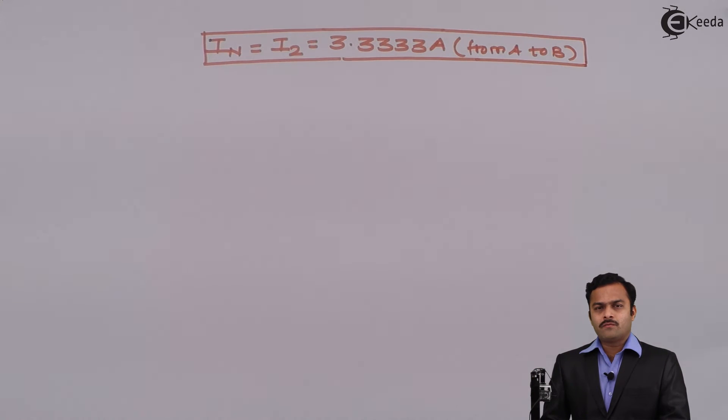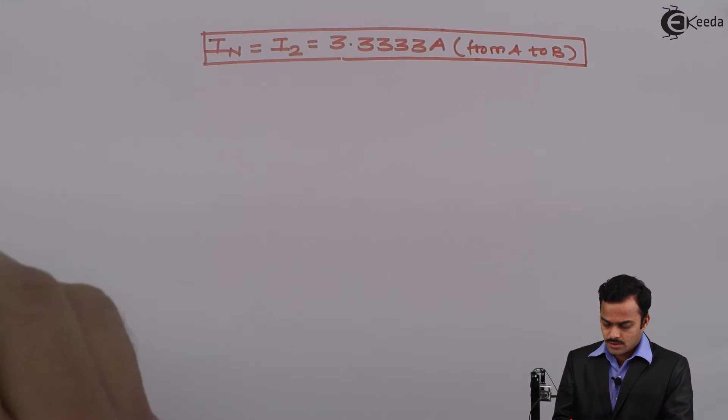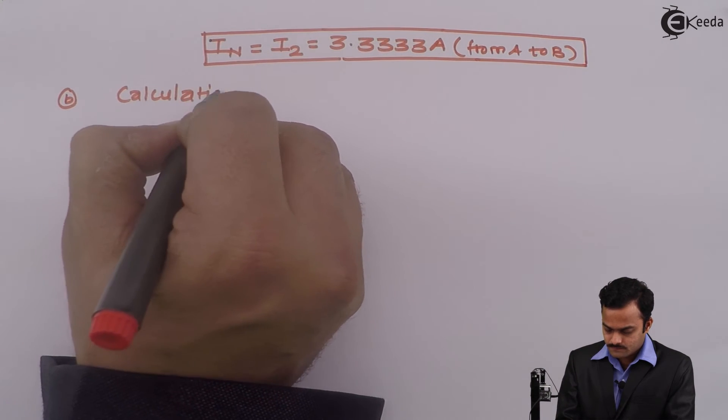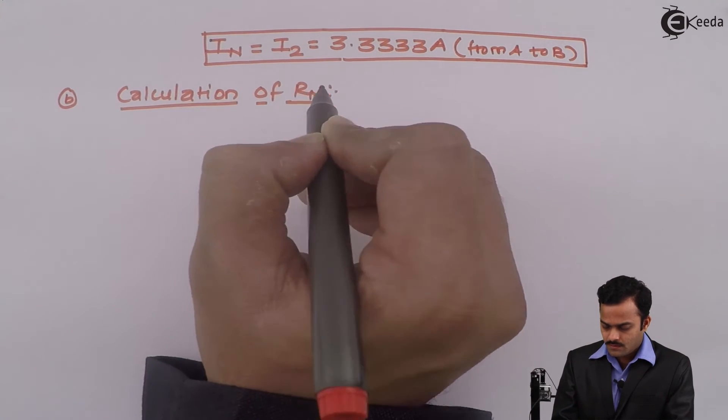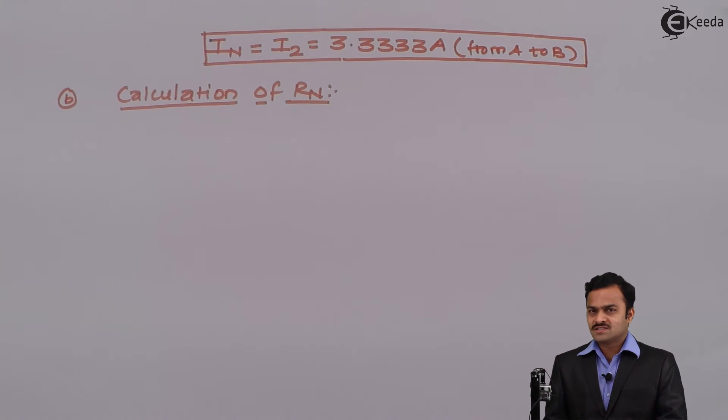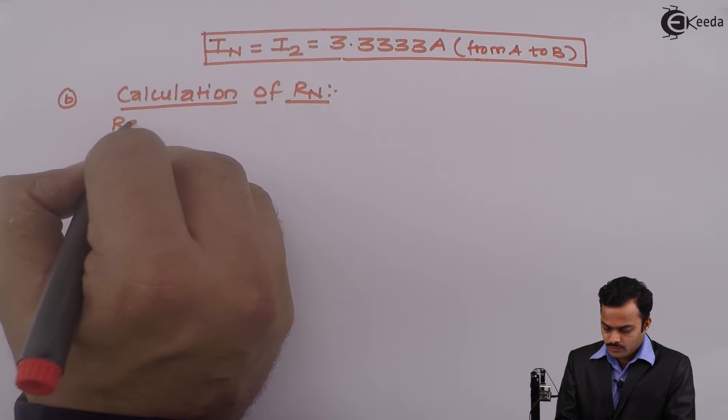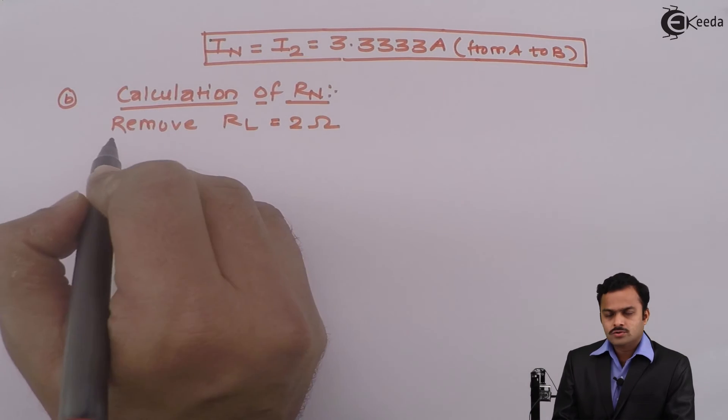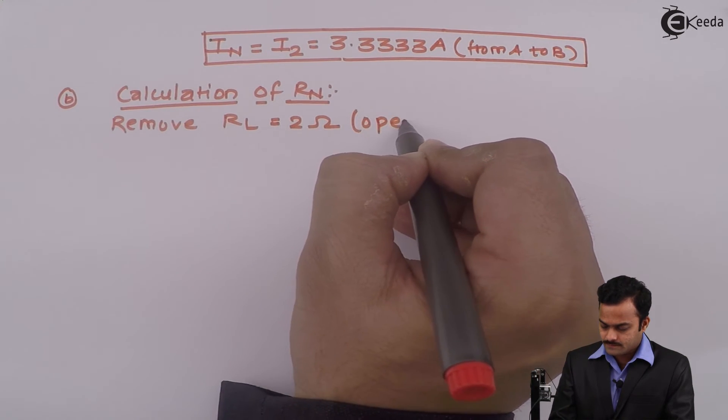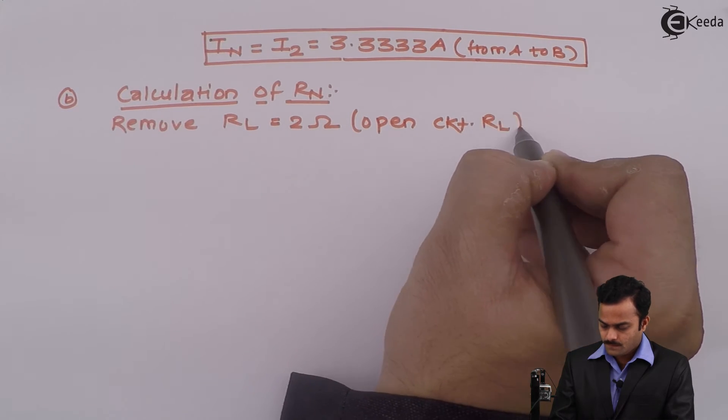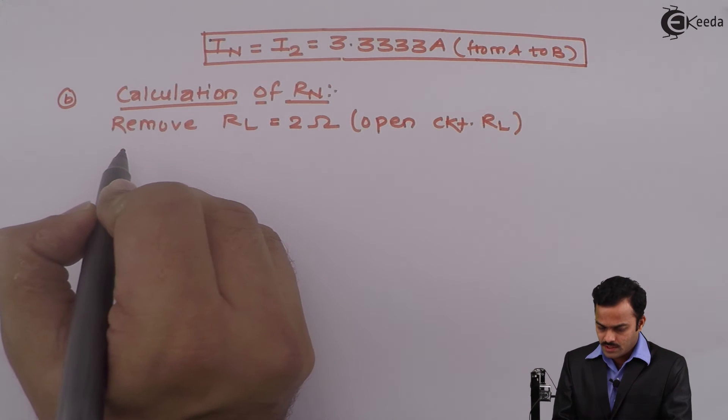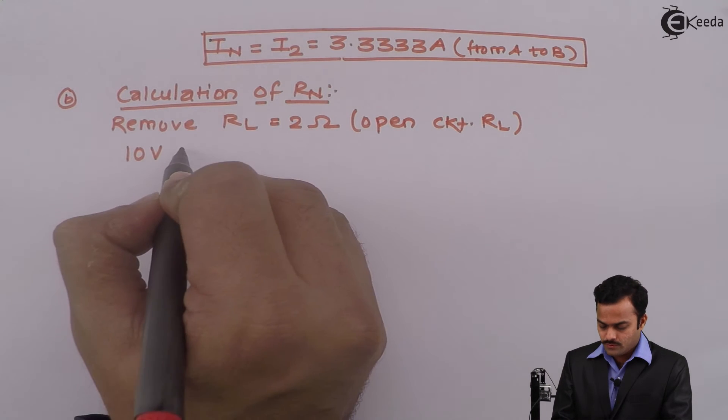So step number 1 we have completed. Let's go to second step, calculation of RN. For this we need to do three things. First thing we need to remove RN, in our case is 2 ohm. So remove RN means we have to open circuit RN. If there's a current source present we need to replace it by open circuit, but in our problem we are having only voltage source and that is of 10 volt. So 10 volt voltage source is short circuited.